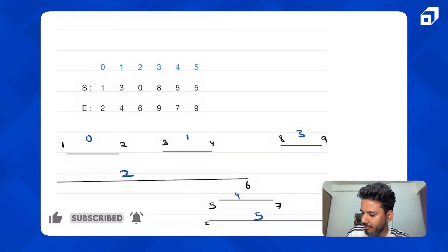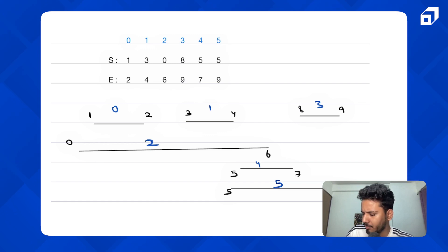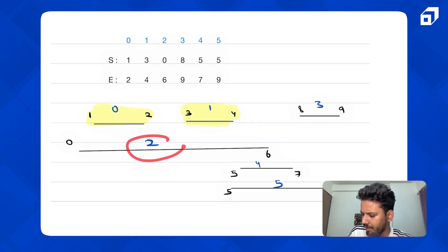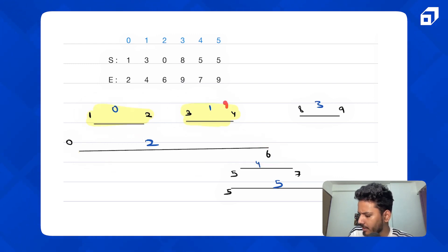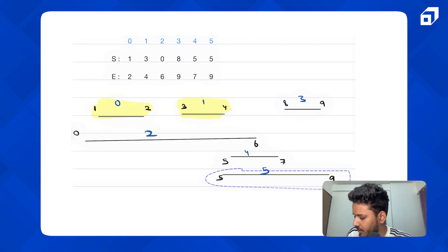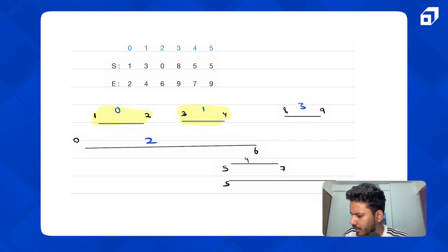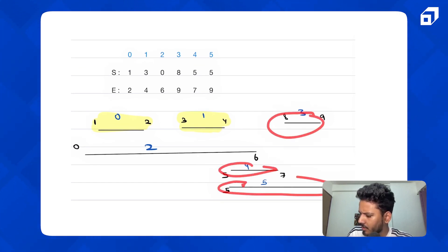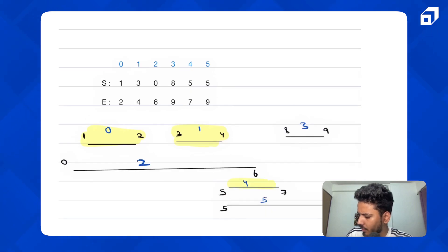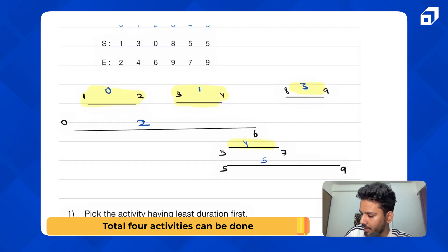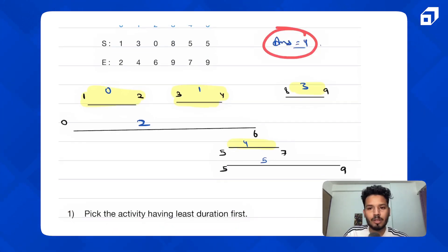Let's try to see what is the solution — the maximum activities we can do. I can do activity zero, then activity one. I cannot pick activity two because instead of it I can do two activities. Looking at the diagram, the answer is four — a total of four activities can be done for this scenario.